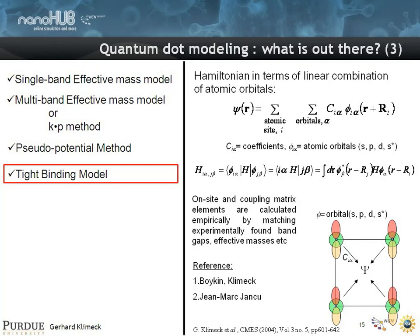So the reason why we pursue this is we have atomistic details. It's computationally less expensive than the pseudo-potential. We can arbitrarily mix materials. In this class of materials that we deal with, we have the correct band mixing, and we get the band structure over the entire Brillouin zone.